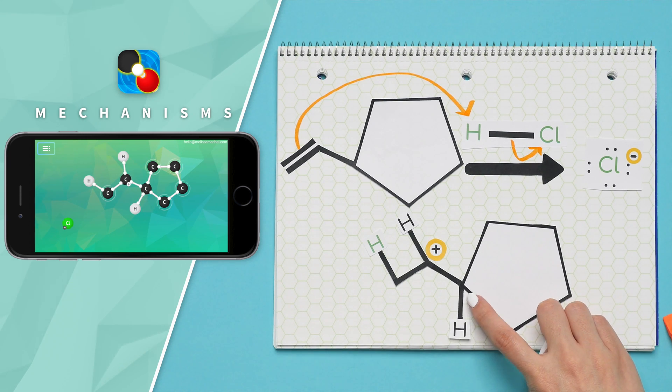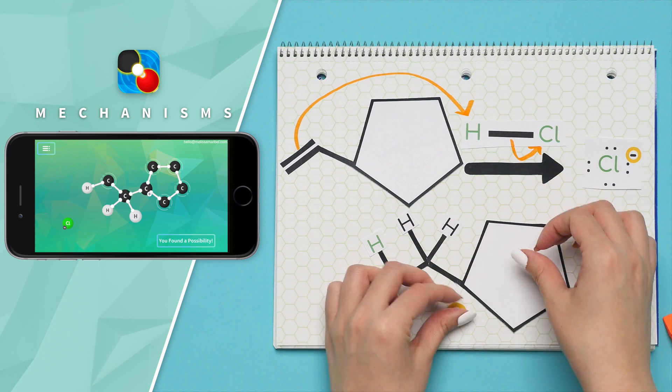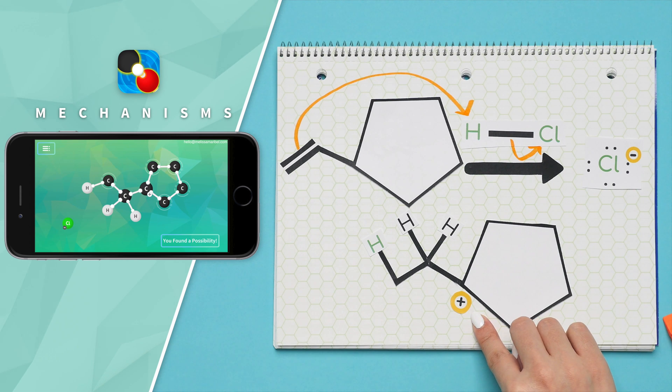There is a hydrogen here on our tertiary carbon, and we will move that here to give us a better carbocation. So we went from a secondary carbocation to a tertiary carbocation.